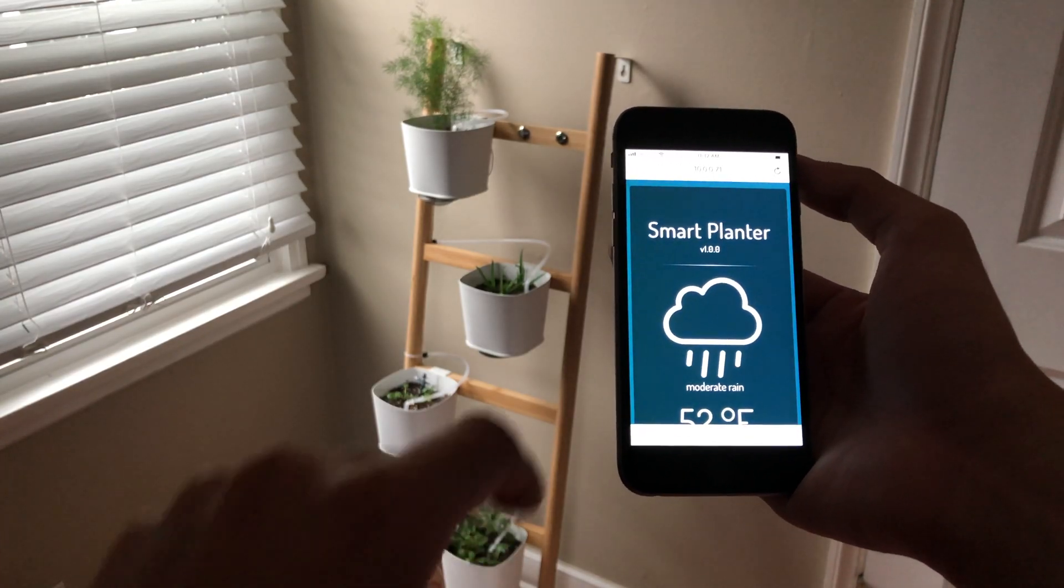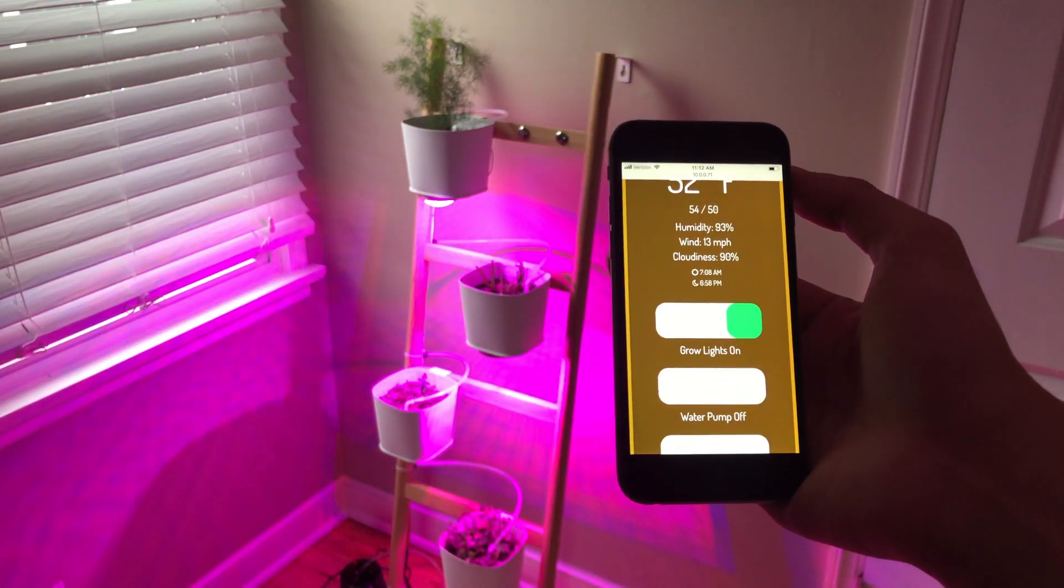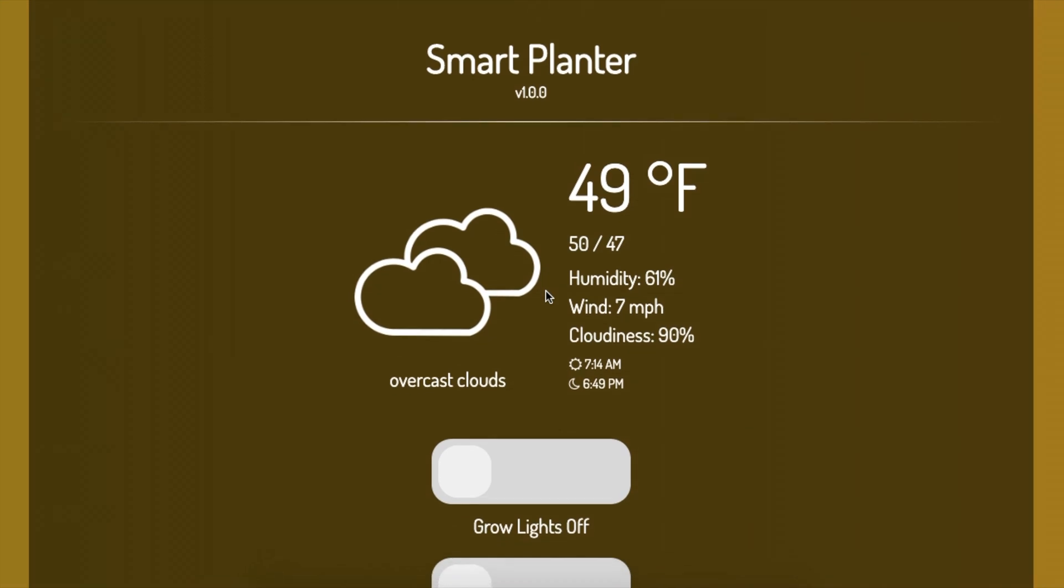The Raspberry Pi is also hosting a local web server. So we can turn on the grow lights, the water pump, and plant sitter mode. All from any device connected to the network.